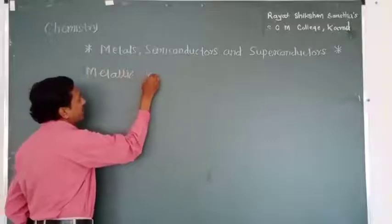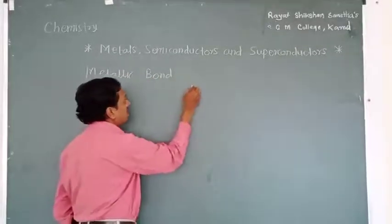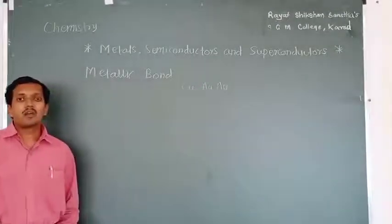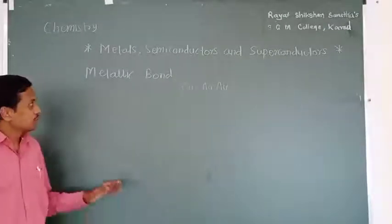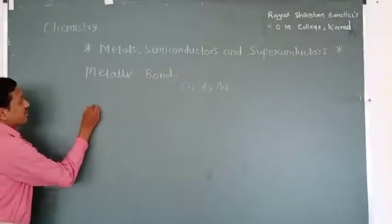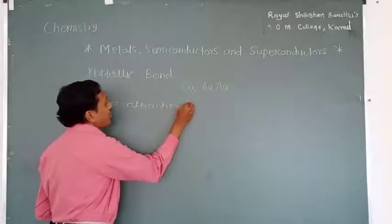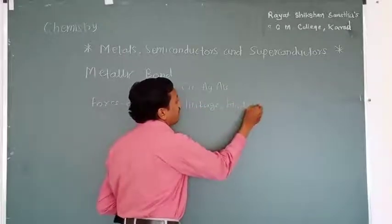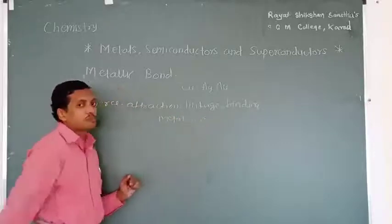Different metallic solids or different metals such as copper, silver, and gold are said to have metallic bond. The definition of metallic bond can be given as: it is the force, attraction, linkage or binding which is responsible for holding all the metal ions tightly together in the lattice of metallic solid.